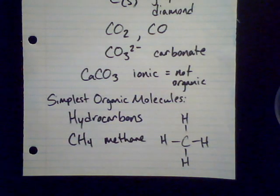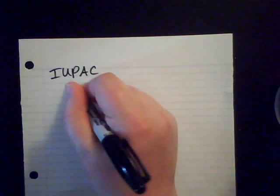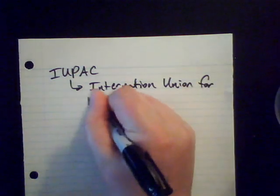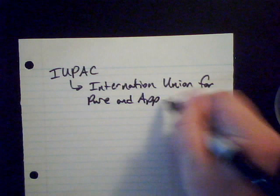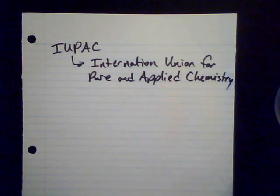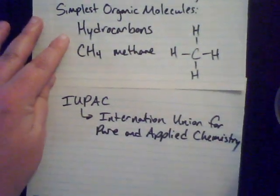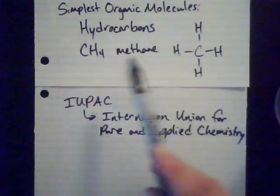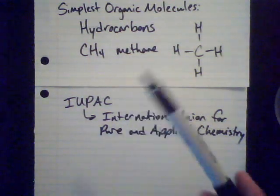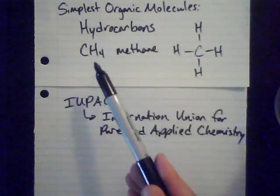This set of rules comes from a governing body called IUPAC — the International Union of Pure and Applied Chemistry. IUPAC comes up with the rules for nomenclature, which is naming. Going back to methane, it has one carbon. Organic chemistry is all about carbons, and that one carbon gives me the prefix 'meth.' We can associate the prefix for the name of the hydrocarbon with the number of carbons in it.